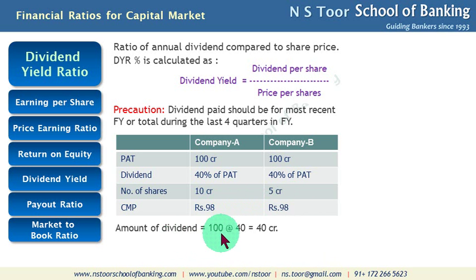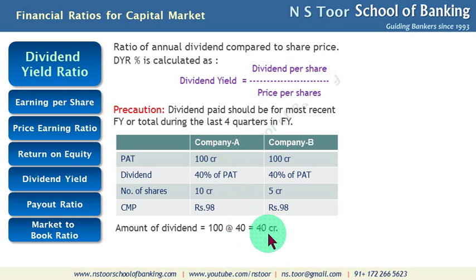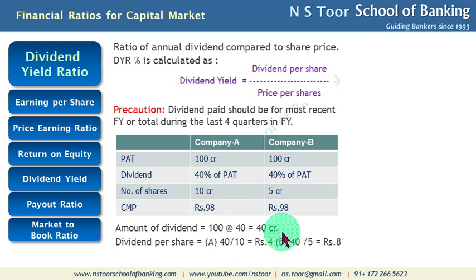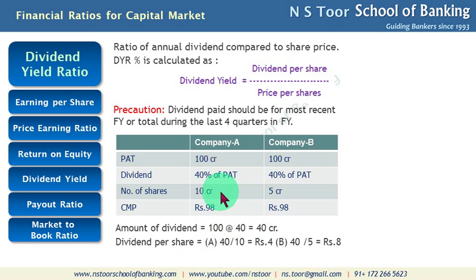Amount of dividend: 100 crore is the total profit after tax, and 40% is the rate of dividend against profit after tax, which means these companies have paid 40 crore rupees as dividend. Dividend per share for Company A: the number of shares is 10 crore, so 40 divided by 10 — Dividend Per Share is Rs. 4.